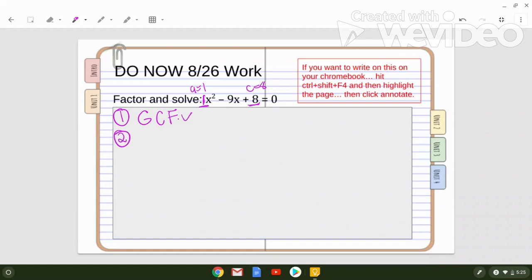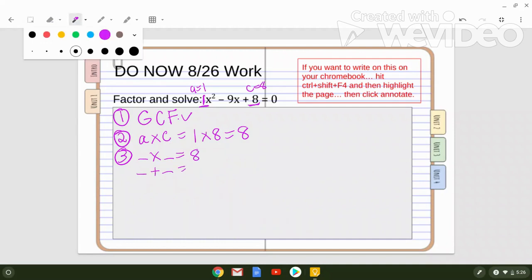We don't have to do anything there. Step 2. I take a and I multiply it by c. So my numbers are 1 times 8. What's 1 times 8? 8. Step 3. I'm looking for two numbers that multiply together to give me 8, but when I take those same two numbers and add them together I actually get the b which is negative 9.